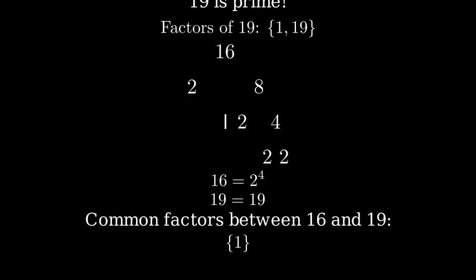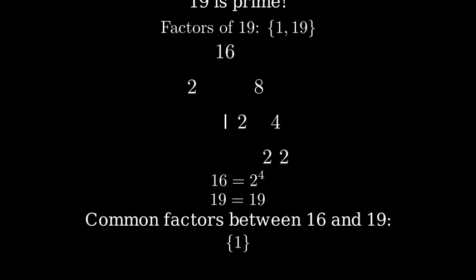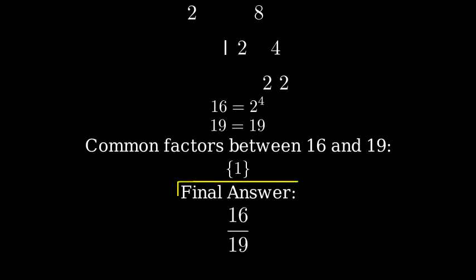This means our fraction cannot be simplified further. Therefore, 16 over 19 is already in its simplest form. This is our final answer.